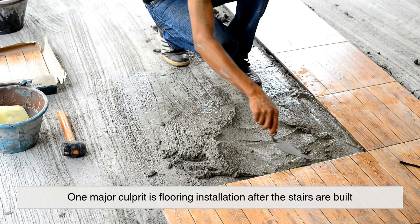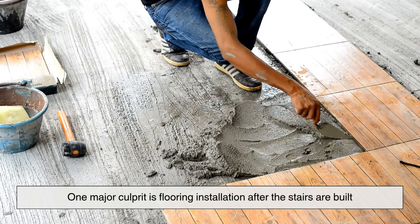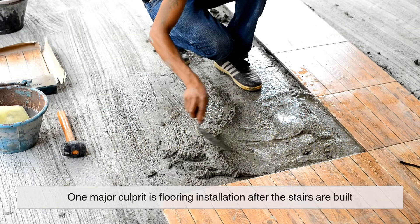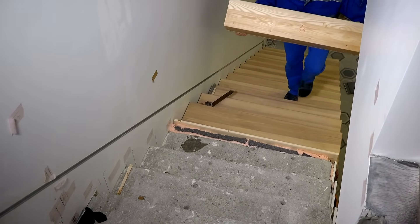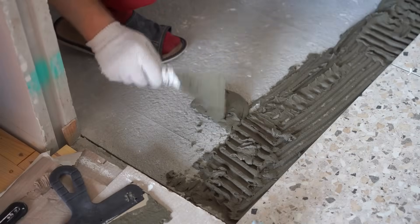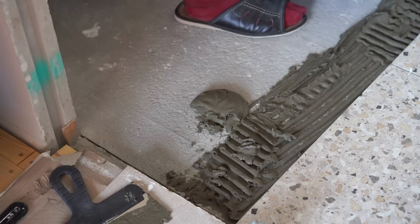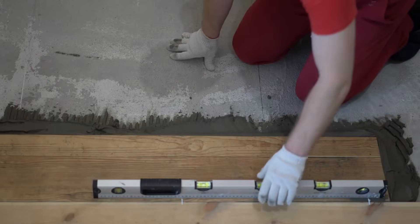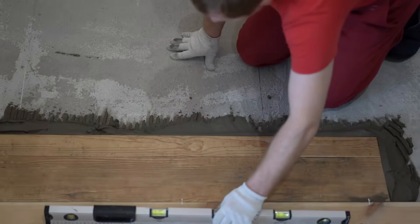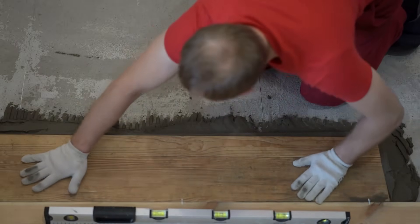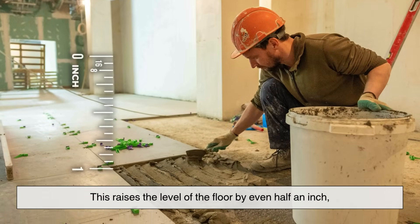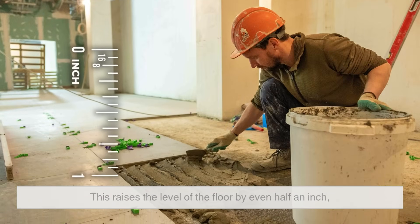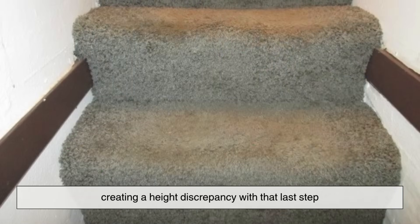One major culprit is flooring installation after the stairs are built. Picture this: a construction crew builds a staircase and gets the dimensions perfect. But after that, someone decides to install new flooring, maybe a thick layer of tile or hardwood, right at the base of the stairs or at the top landing. This raises the level of the floor by even half an inch, creating a height discrepancy with that last step.